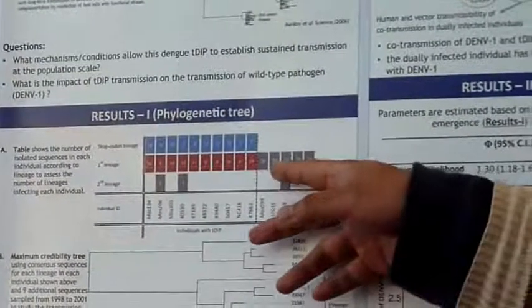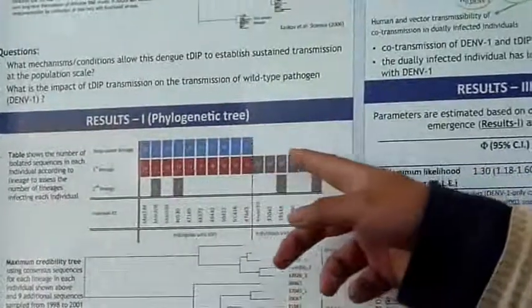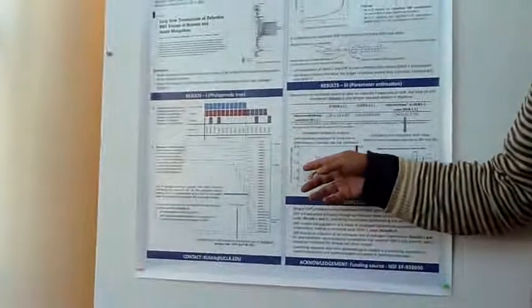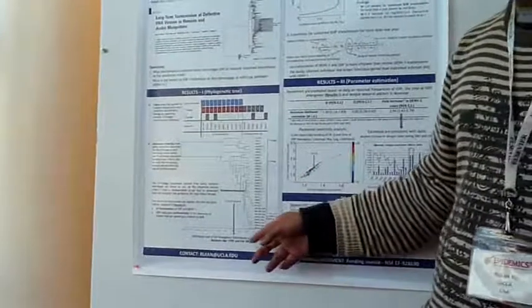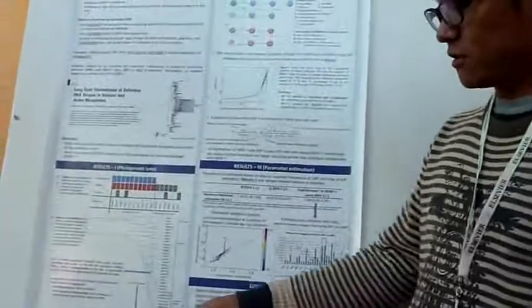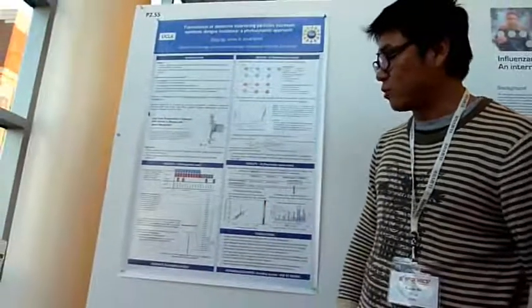We derived the consensus sequence for each category in these blocks, then constructed this tree according to these consensus sequences. Then we can estimate the date of defective interfering particle emergence, which is estimated between March 1999 and February 2001.